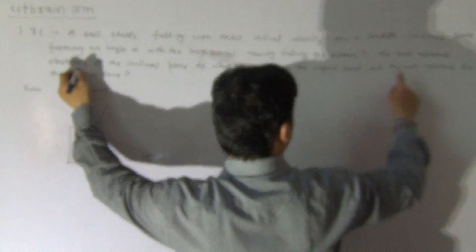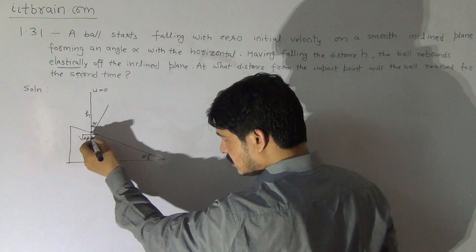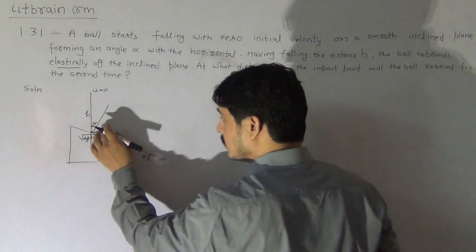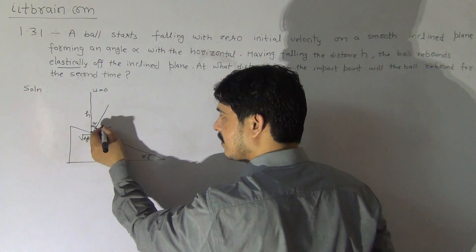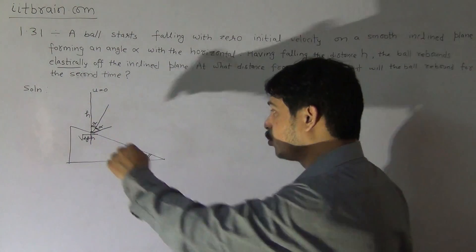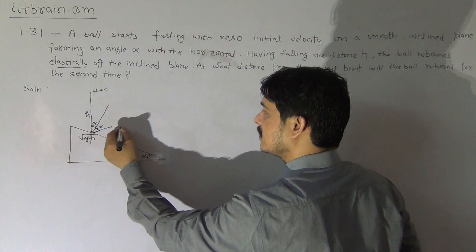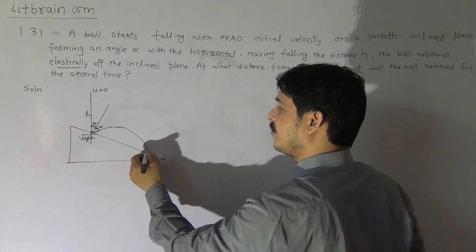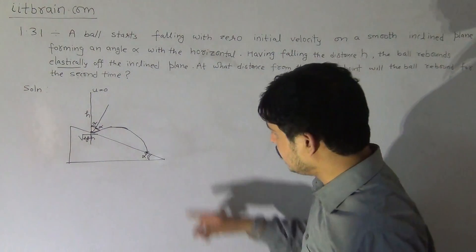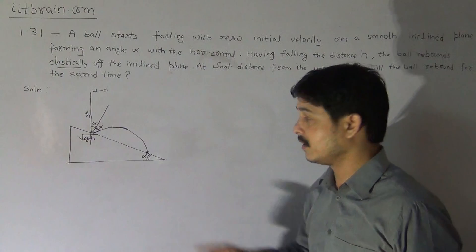Since the particle rebounds elastically, it leaves with the same speed and same angle alpha with the normal. So the particle hits the incline at speed root 2gh and returns at speed root 2gh at angle alpha. We need to calculate at what distance from the impact point the ball will rebound for the second time.